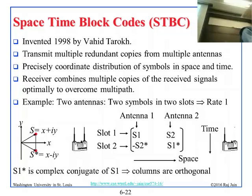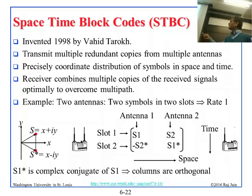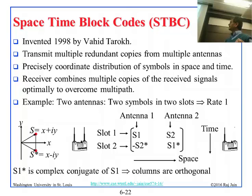The idea is that the space is basically the antennas — antenna 1, antenna 2 — and the vertical axis is time. In slot 1, on antenna 1 you send S1; on antenna 2 you send S2. Then in slot 2, you send minus S2-star, which means the conjugate of S2 with a minus sign.